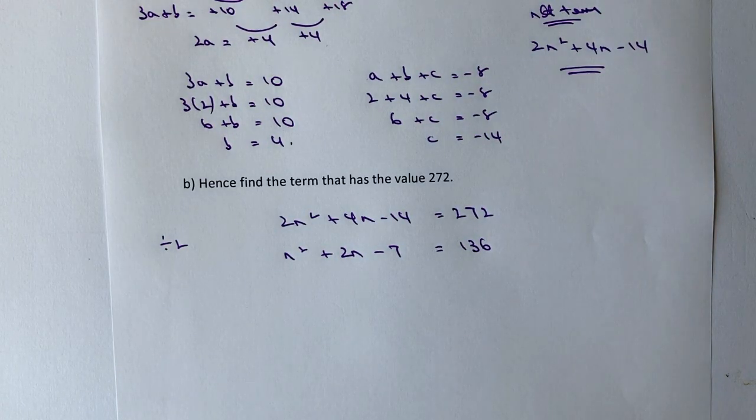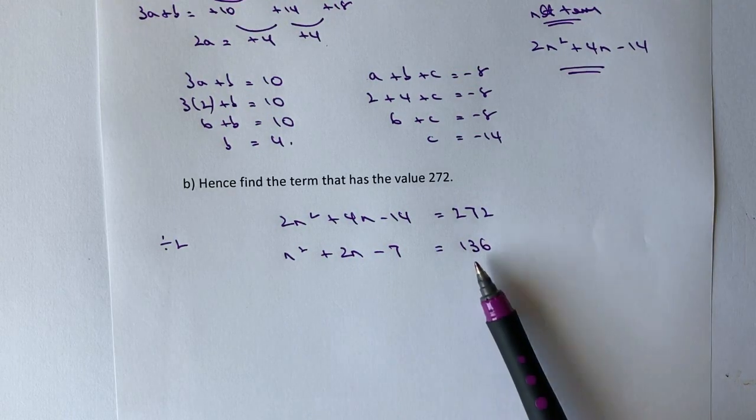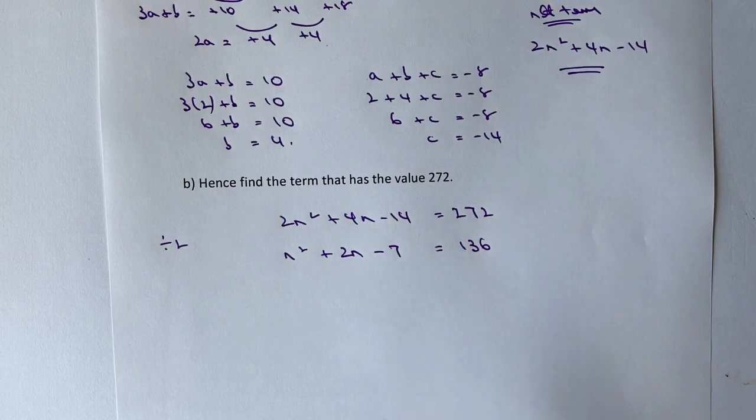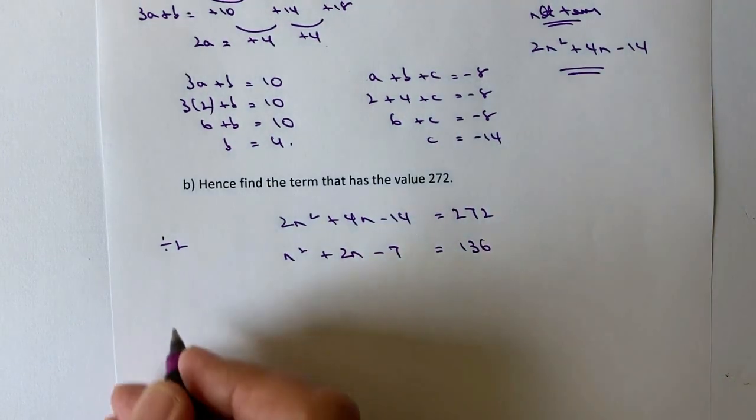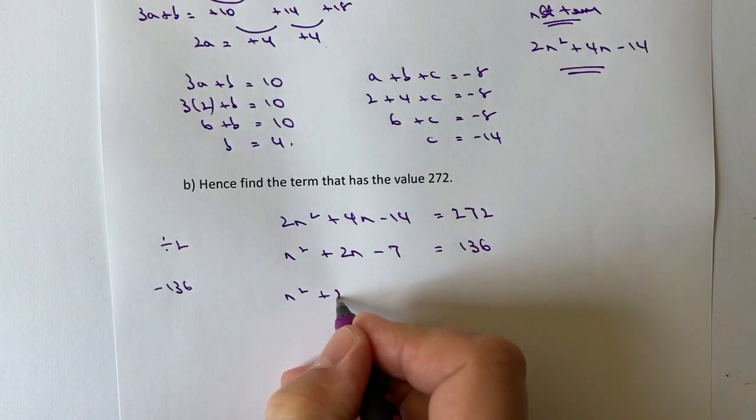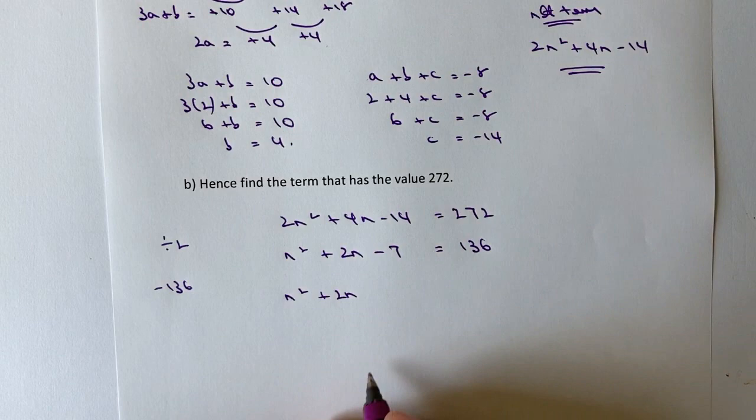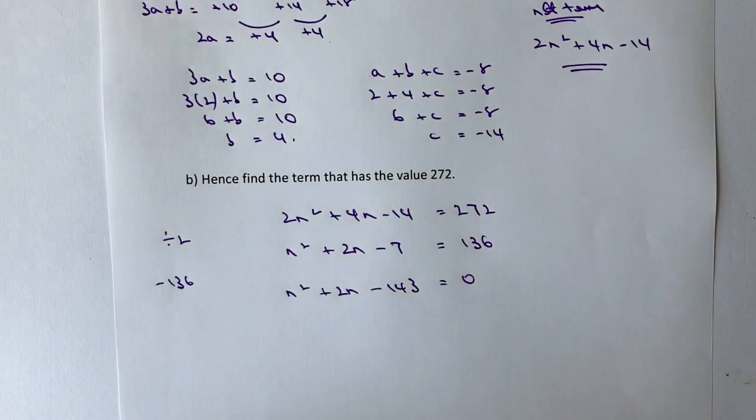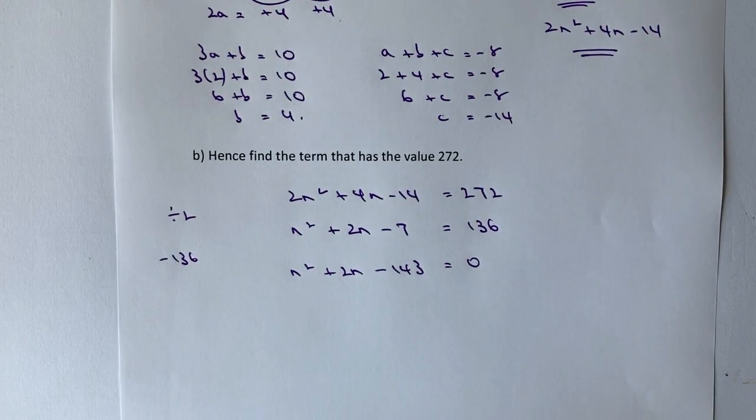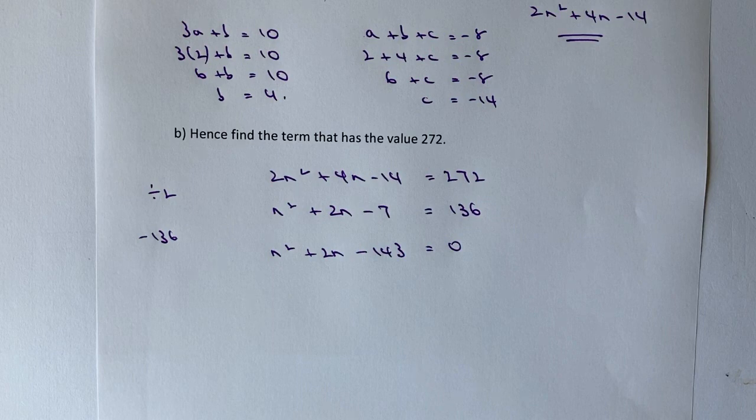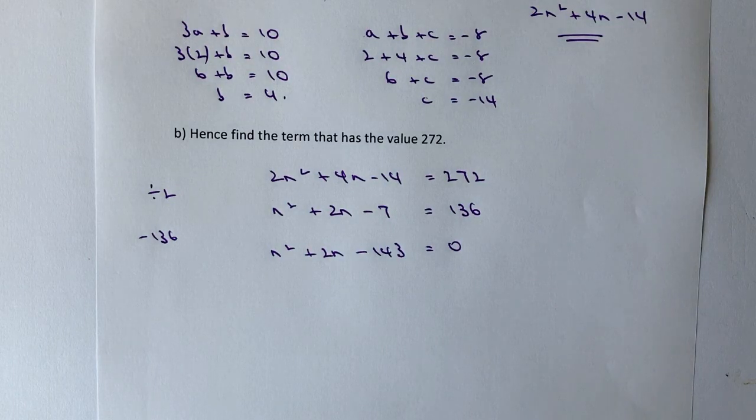Now, in order to factorize, I need to make it equal to 0. So I have to take this 136 and move it over towards the left-hand side. In other words, I've got to subtract 136 from both sides. So I'm going to get n² plus 2n minus 7 minus 136 is minus 143 equals 0. This is where it's going to get a little bit tricky because we need to be able to factorize it.